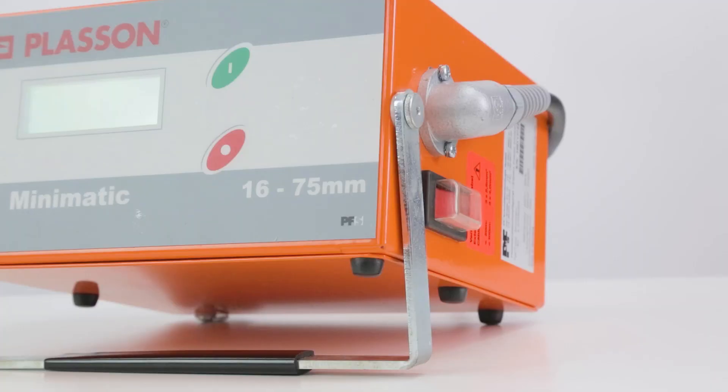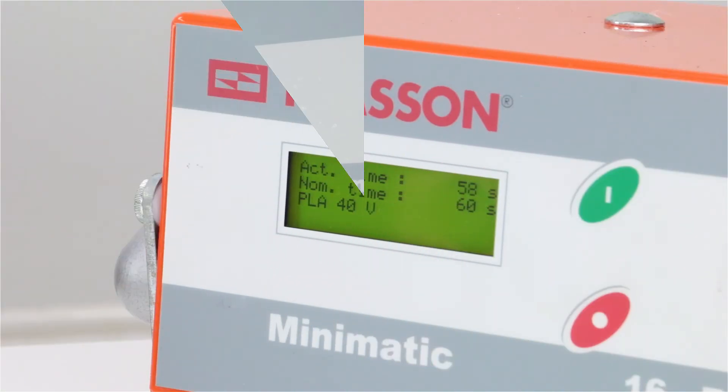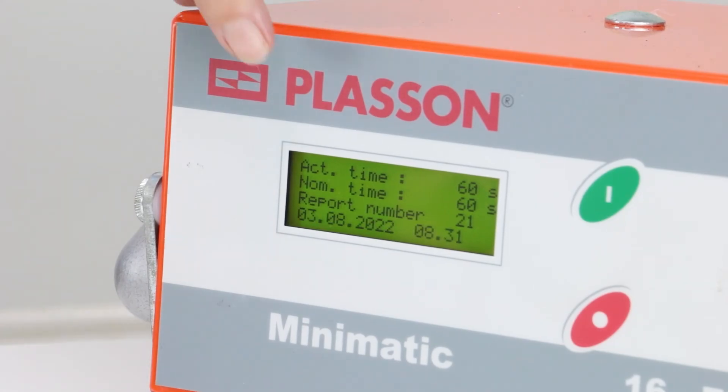Now this is all set up, it's time to initiate the welding process. Cutting forward, in our case the welding time is 60 seconds, and now that time's up, our machine gives us a date and finish time.